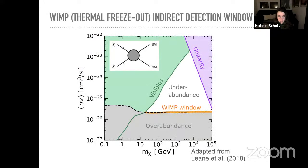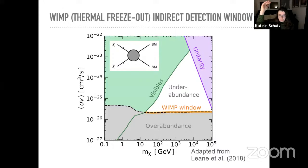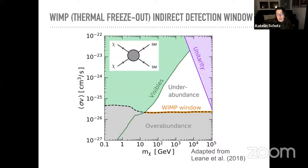Indirect detection is the most direct probe of thermal freeze-out. The dashed line represents the thermally-averaged cross section needed to give the observed dark matter abundance. If σv is too large, you don't make enough dark matter because you ride the Boltzmann curve down too far; if σv is too small, you have too much. The low-mass end is constrained by indirect probes — dark matter annihilating to standard model particles and creating gamma rays observable by, for example, the Fermi gamma-ray space telescope, by pointing it at dark matter-dominated systems like dwarf galaxies.